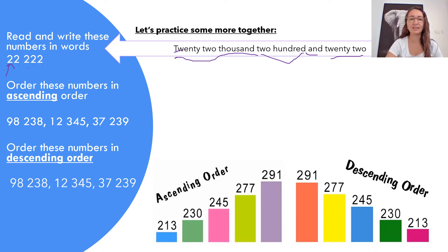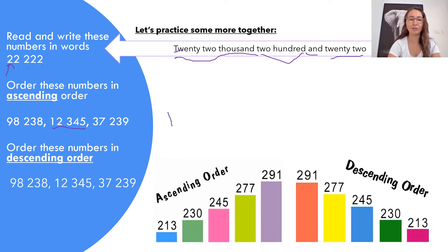Now we're going to look at ascending and descending order. You've got the picture prompts here so when you turn to the next page to do your independent task, you can come back to this picture to help you. Ascending order — here we have three numbers: 98,238, 12,345, and 37,239. What determines the difference is the 10,000 and thousand column. We want the smallest amount first. We know it would be 12,345 because there's only one 10,000. So our first number would be 12,345.